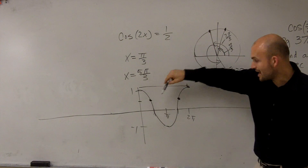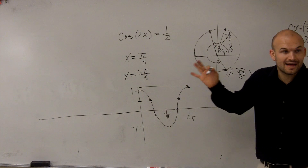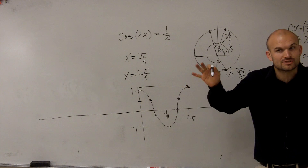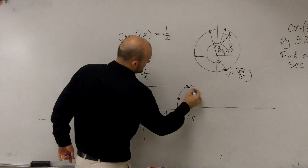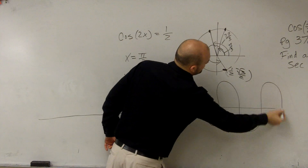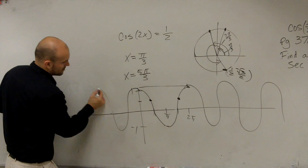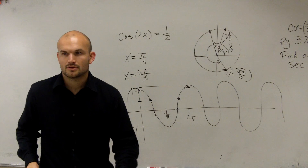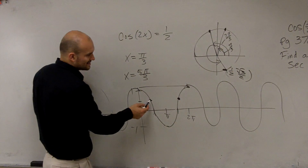So the two correct angles are π/3 and 5π/3. That's just on the interval of 0 and 2π. However, this graph continues in both the positive and negative direction.